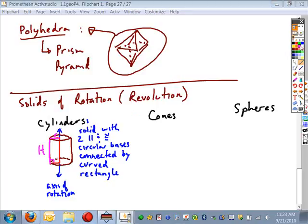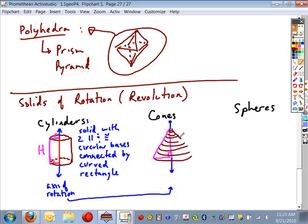If you take a right triangle, it has to be a right triangle. But if you take a right triangle and you rotate it along an axis of rotation, what you'll form, again, as you rotate this about, you wind up forming this cone.